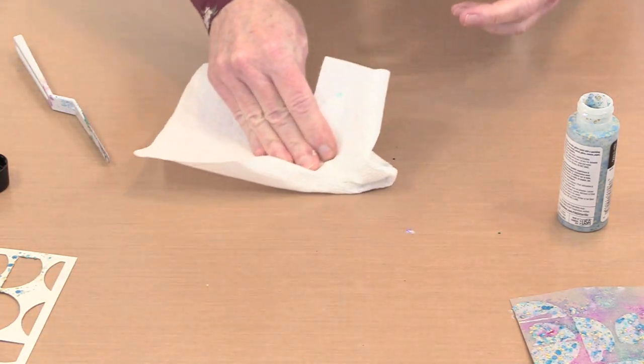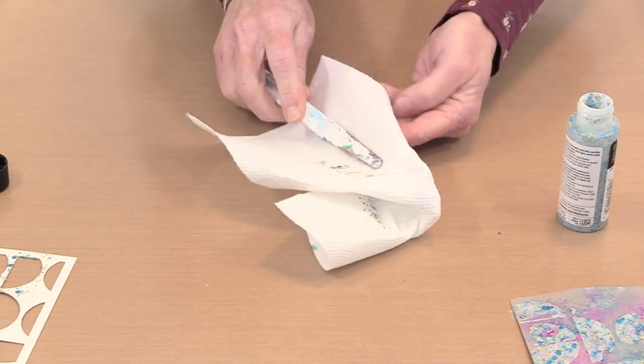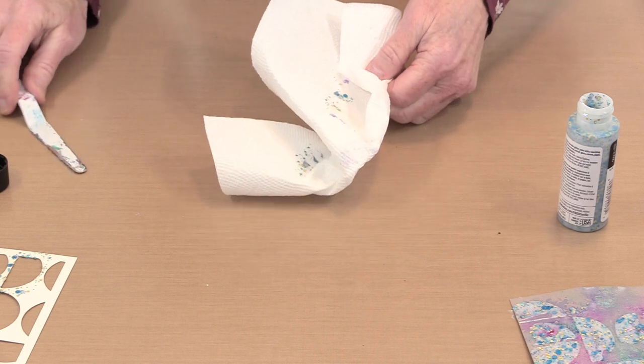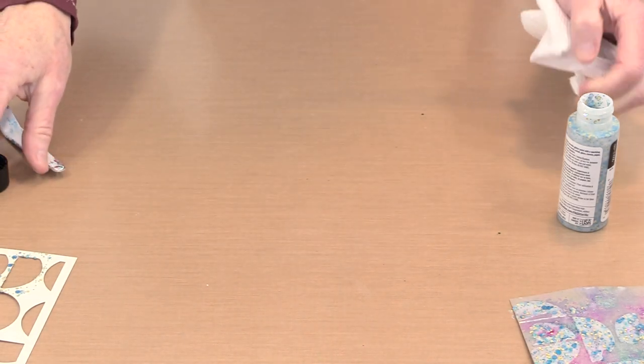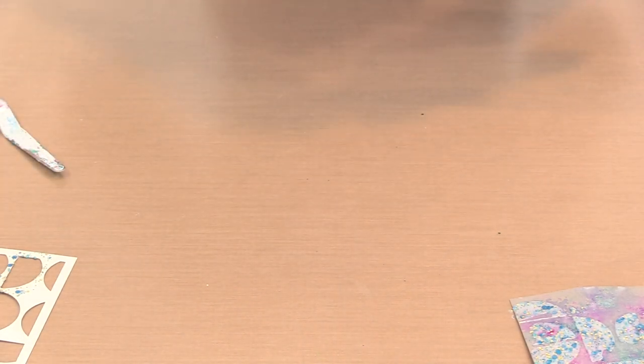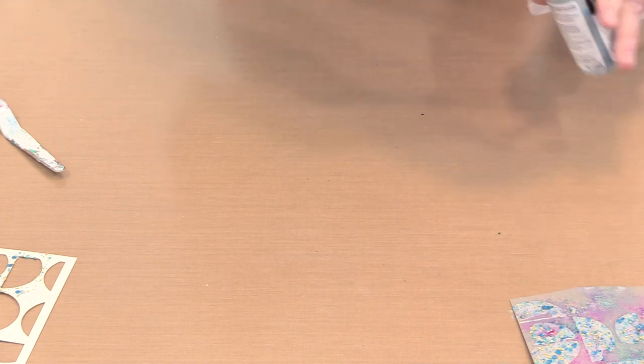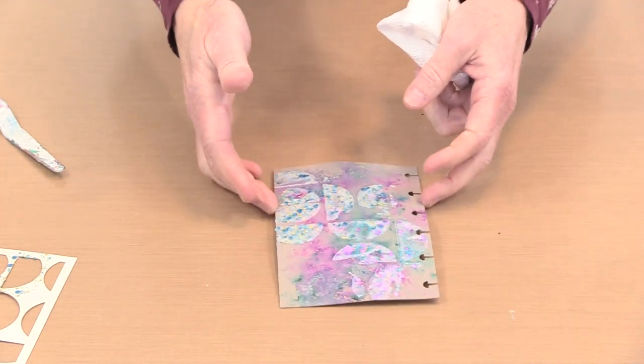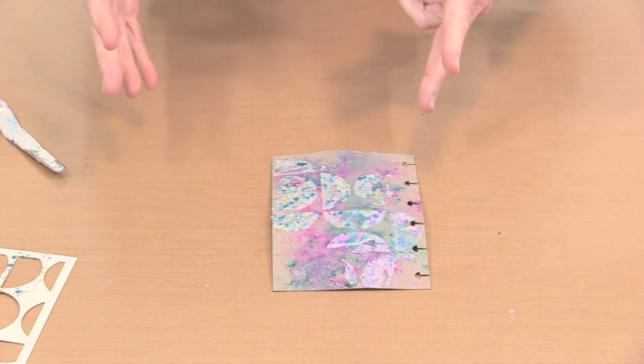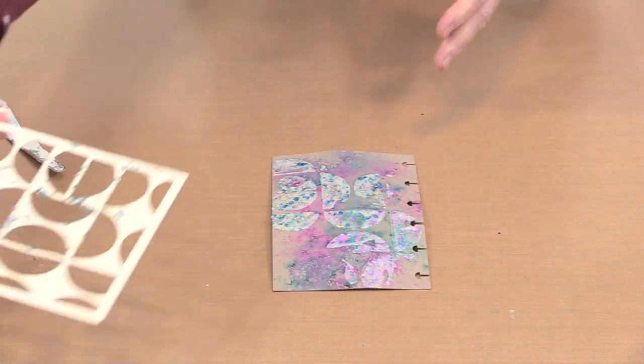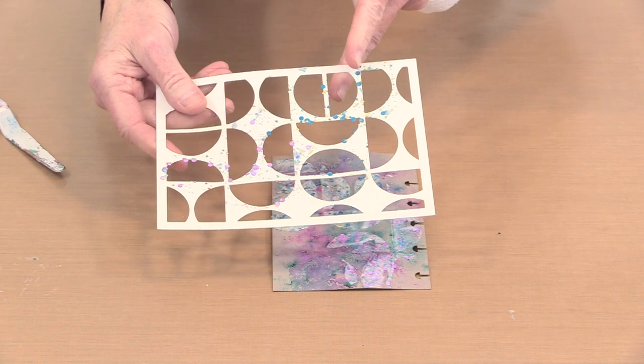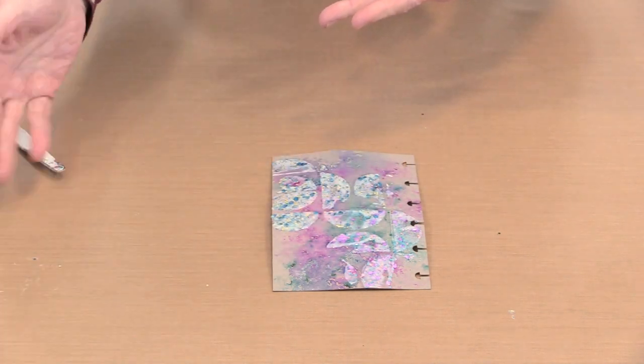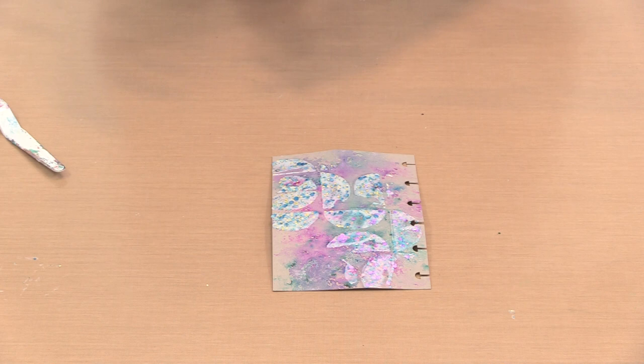So coming back to thinking about what happens when you work with a stencil. Because this stuff is multi-surface, it will adhere to that plastic. And so you want to have a bit of water to one side, something big enough to fit your stencil in, or you want to wipe it down immediately once you're through doing this. Now obviously with a creative cut, it's to my benefit that this stuff stays on here and it adds texture and pattern and some shine.